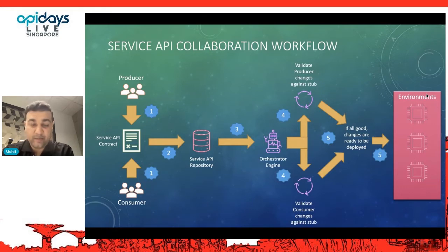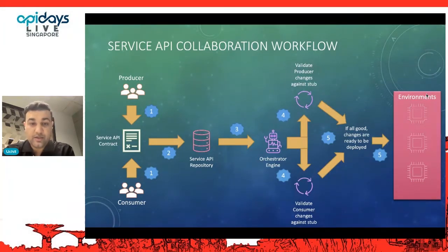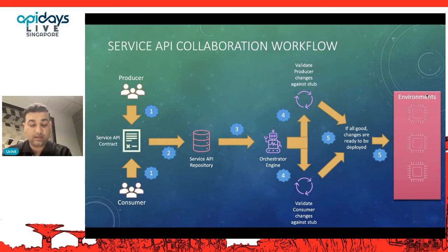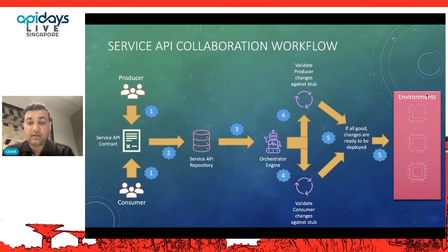Multiple approaches can work — sequential or parallel — to validate both producer and consumer side changes. Both teams start doing verification from their end. Once verification is confirmed from both sides, the contract design is considered good. There are no design gaps because whatever output is being requested, we are getting it from both the producer and consumer ends.